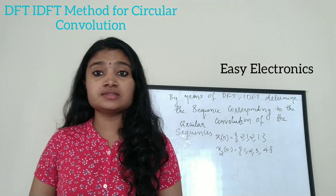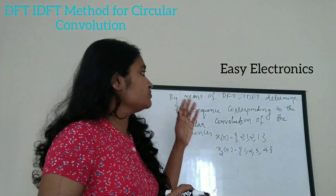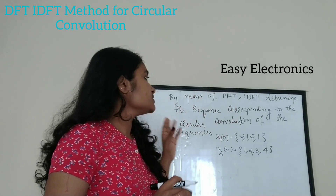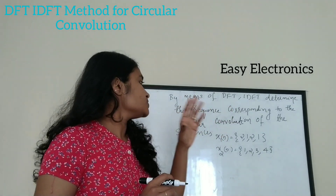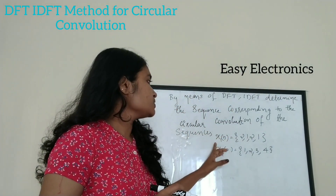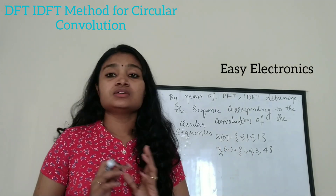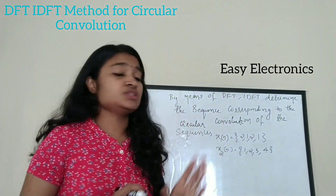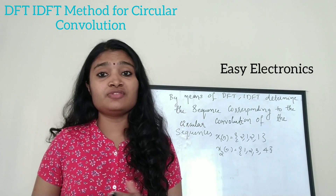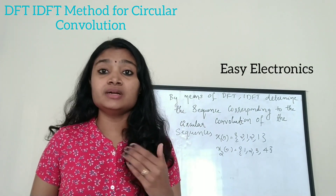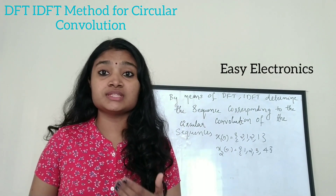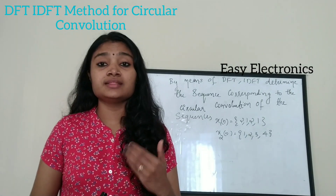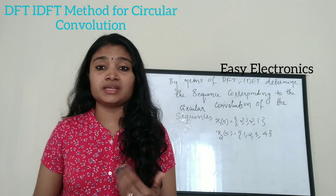The question is: by means of the DFT-IDFT method, determine the sequence corresponding to the circular convolution of sequences x1(n) and x2(n). We cannot directly find the circular convolution; we have to use the DFT-IDFT method, that is, we have to apply the circular convolution property.